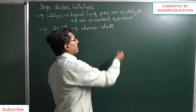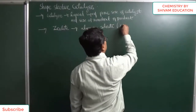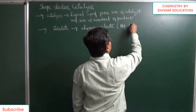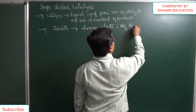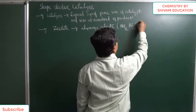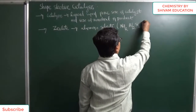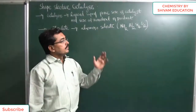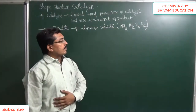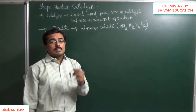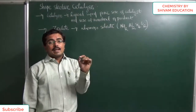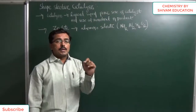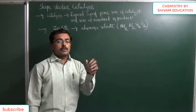The formula of this aluminosilicate can be written as Na₂Al₂Si₄O₁₂. So the formula of zeolite is Na₂Al₂Si₄O₁₂.